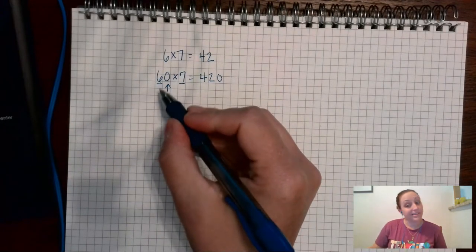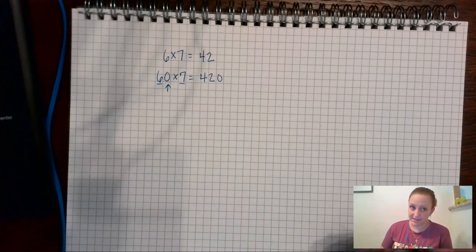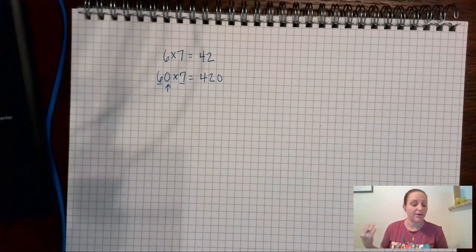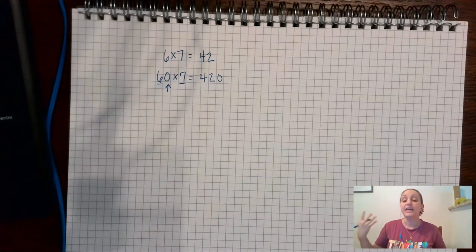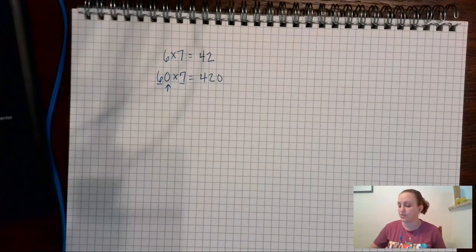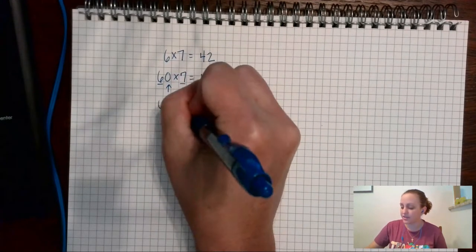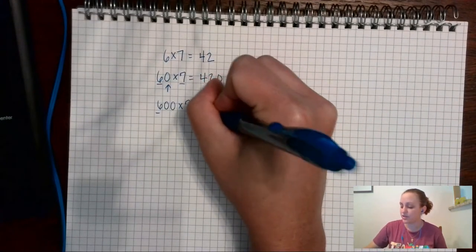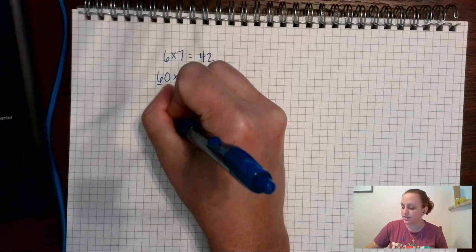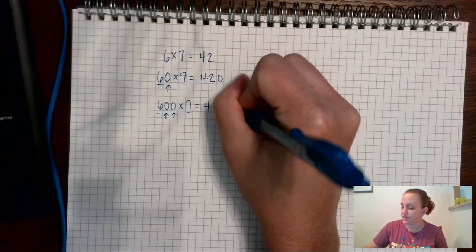Okay so any number that ends in a zero is a multiple of 10. That's a little trick and it doesn't matter how many zeros it has at the end, it's still a multiple of ten, so we can do this trick. So we can do 600 times 7. All right, I still am going to do 6 times 7 is 42, but now I have two zeros.